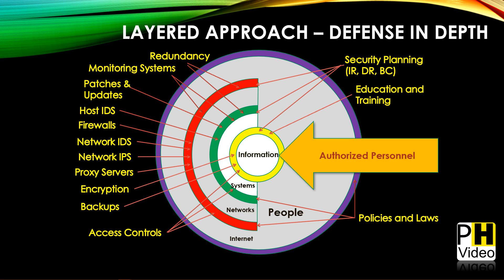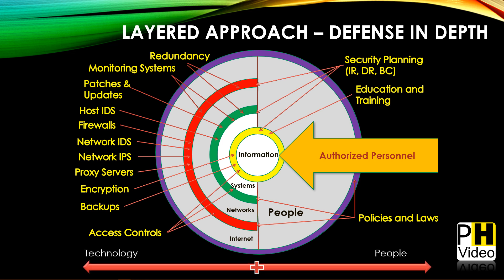The key concept is that authorized personnel must have access to the information — security is a business enabler, not a business preventer. There's a big orange arrow representing the idea that we want a fast track and express lane so authorized people can get to information quickly and easily without being hampered by security measures. Finally, we want a balance between people-based and technology-based security mechanisms and controls.